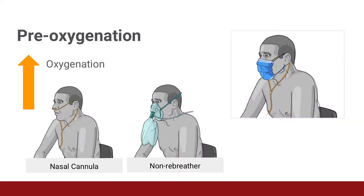It is important to provide oxygen to the patient prior to intubation, or pre-oxygenation, in order to avoid hypoxia during the procedure. Oxygen delivery methods include nasal cannula up to 6 liters and a non-rebreather mask at 15 liters. Both of these should be covered by a surgical mask on the patient to reduce droplet dispersion. Some institutions have approved the use of high flow nasal cannula or noninvasive ventilation strategies such as CPAP or BiPAP.